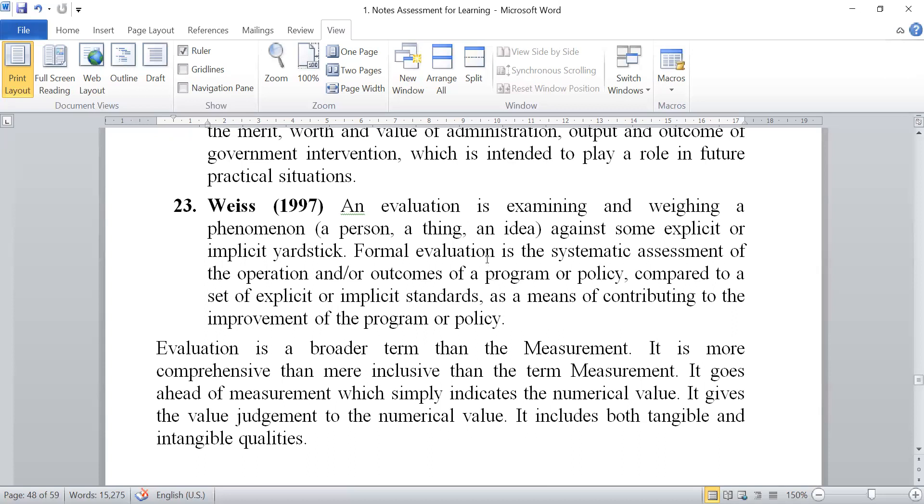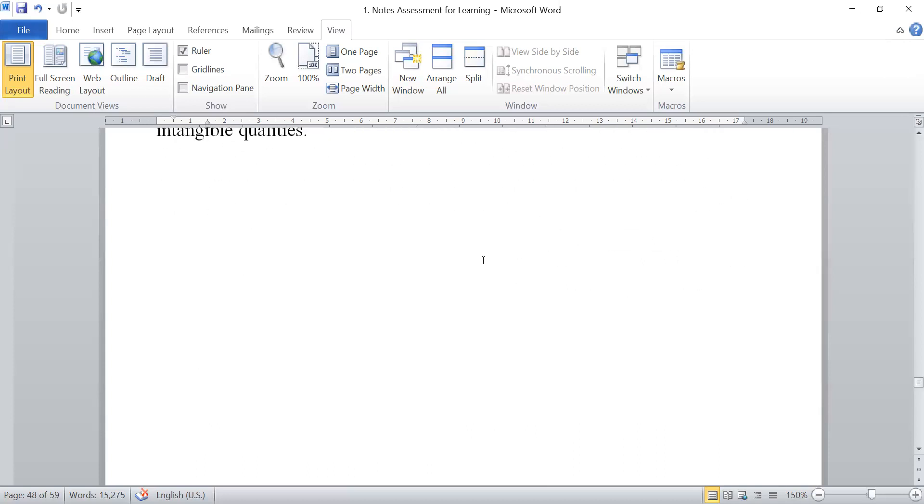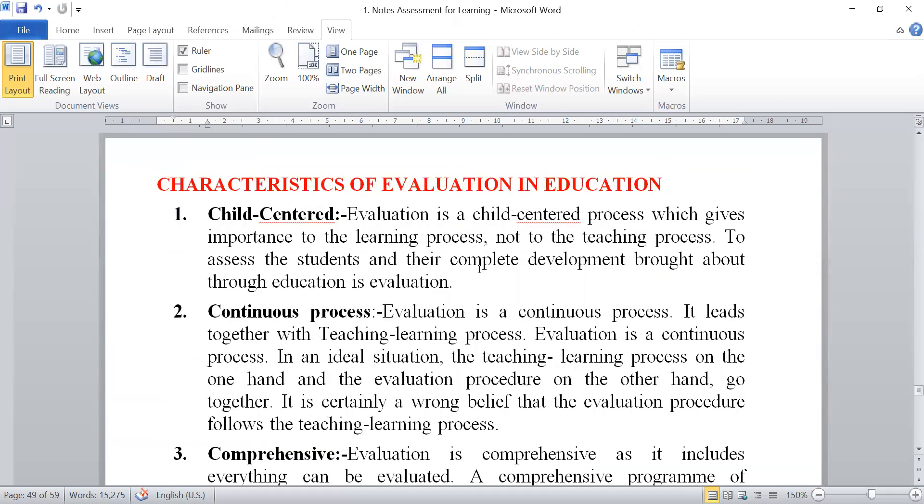Students, here we have given so many definitions and these definitions are gathered or collected from different sources and you can learn or you can read according to your choice. Now the characteristics of evaluation in education. The first is child-centered. Evaluation is a child-centered process which gives importance to the learning process not to the teaching process. To assess the student and their complete development brought about through education is evaluation.